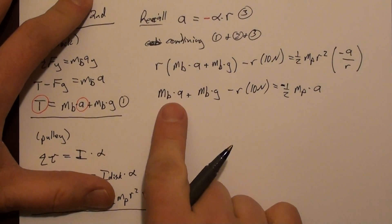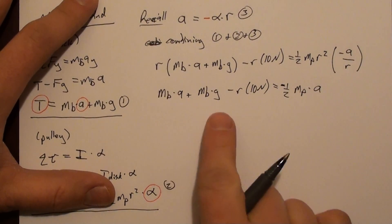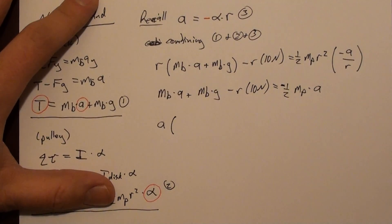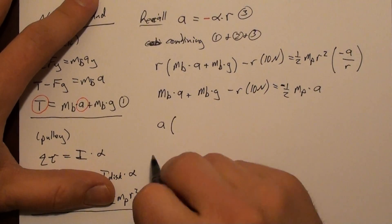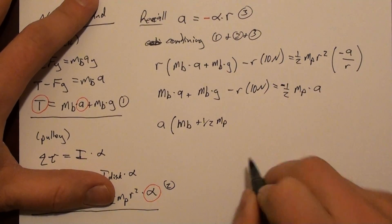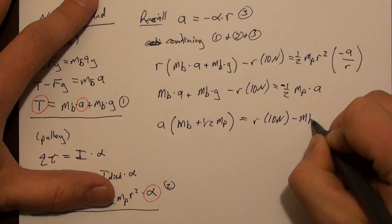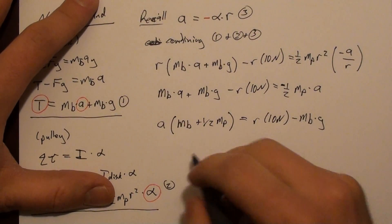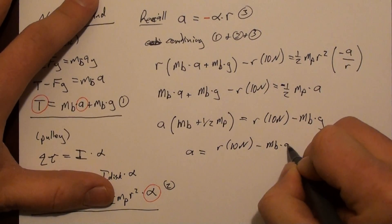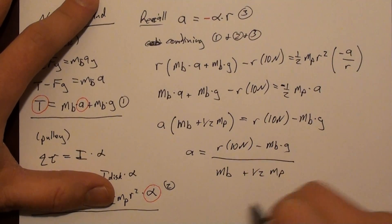So now I can move, let's move this term over here and these two terms over there. So what I get is I can factor out the a. So a times mb plus one half mp, factoring out the a, equals r times 10 newtons minus mbg, because I subtracted both of those terms over here. So now I can divide by this. And what I get is a equals r times 10 newtons minus mbg, all divided by mb plus half mp. And I can plug numbers into this now.